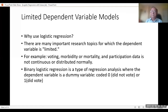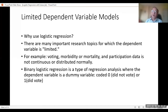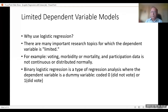This probability is always between 0 and 1, so our dependent variable is either 0 or 1, or between 0 and 1. Binary logistic regression is a type of regression analysis where the dependent variable is a dummy variable — coded 0 meaning 'I will not vote' or coded 1 meaning 'yes, I will vote.'